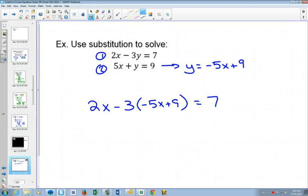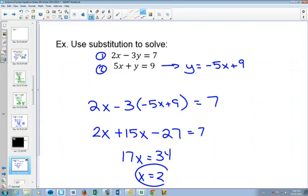And now we use our algebra skills from grade 9 to solve for X. Negative 3 times negative 5 would be plus 15X. Negative 3 times 9, negative 27, equals 7. These are like terms. We can add them. Opposite of minus 27, add 27 to both sides. You get 34, divide by 17, and the X value is 2.